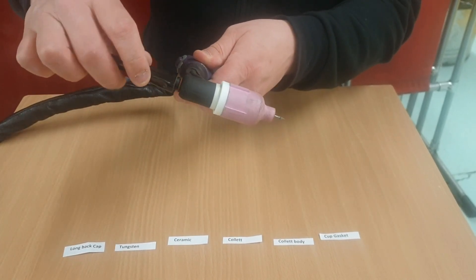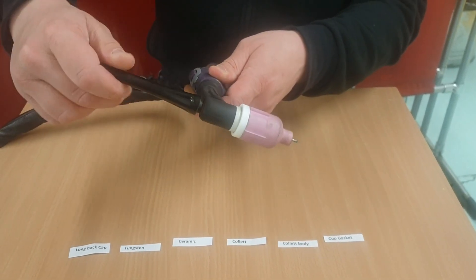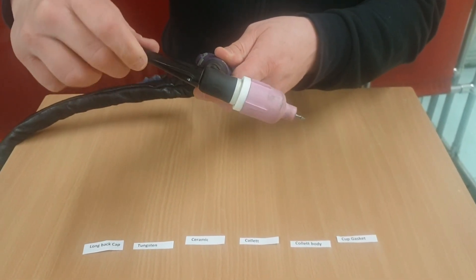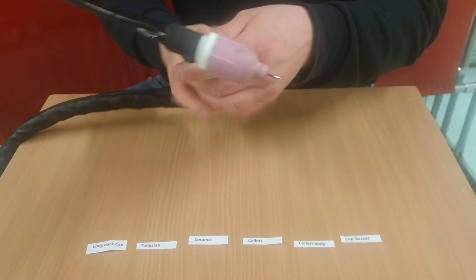After this you have the tungsten and the long back cap which keeps your tungsten tight and in place. Now we're correctly set up, tight and secure, and ready to start our welding journey. Check out one of the videos on screen now.